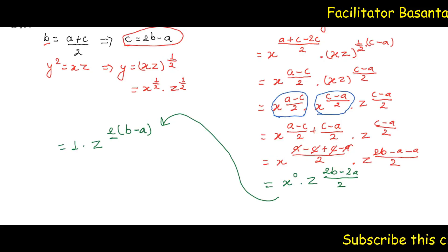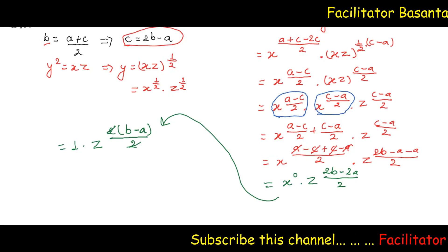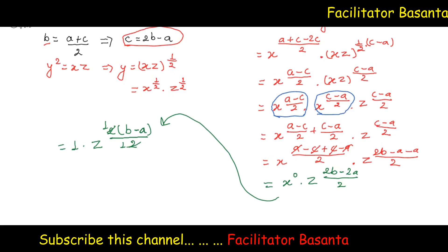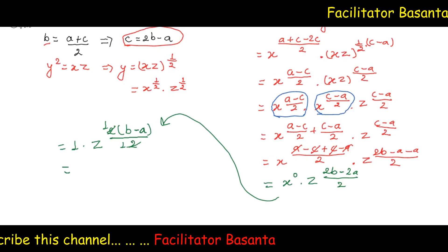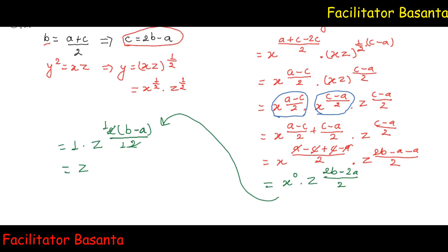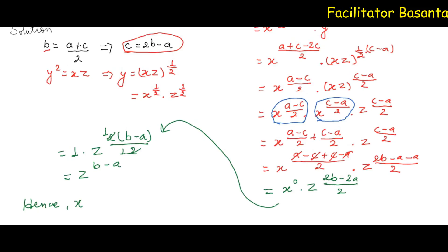This simplifies to 1 into Z to the power B minus A. Hence, X to the power B minus C dot Y to the power C minus A is equal to Z to the power B minus A. Proved.